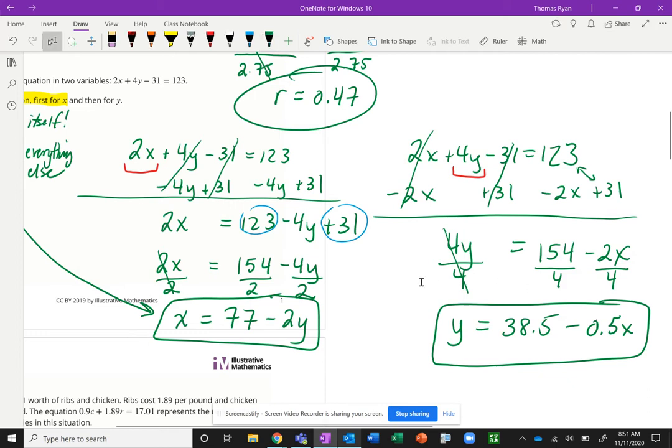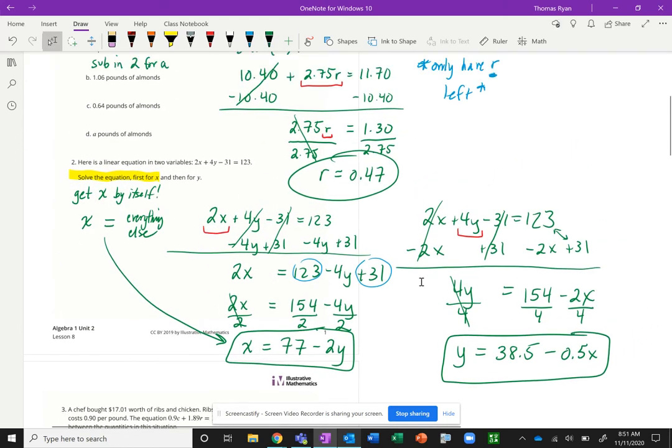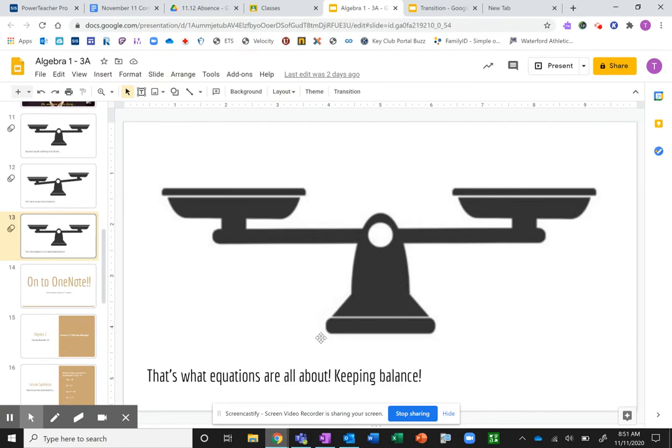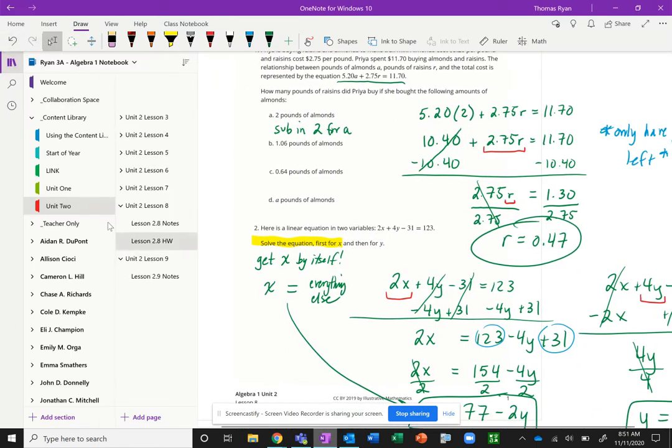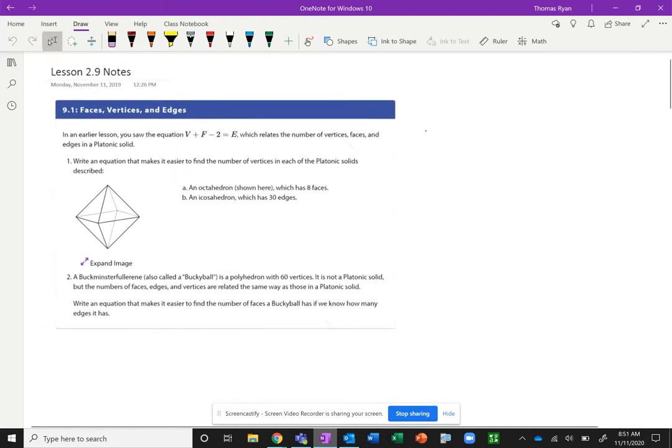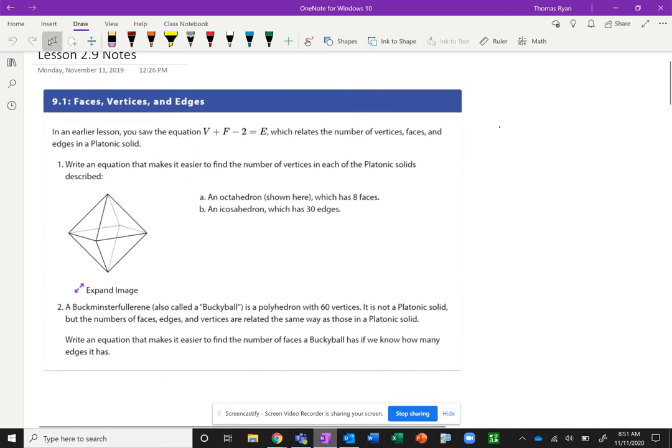Now we've solved for both X and Y. That was the big takeaway, is being able to solve an equation for a certain variable, or being able to plug stuff in and then use our idea of creating equivalent equations by making sure that we stay in balance. If we do something, we got to balance it out. Let's go to 2.9.